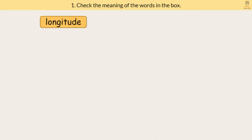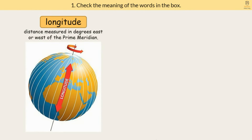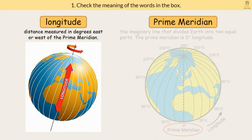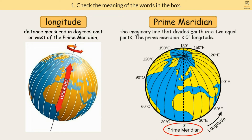Longitude: distance measured in degrees east or west of the prime meridian. Prime meridian: the imaginary line that divides Earth into two equal parts. The prime meridian is 0 degrees longitude.